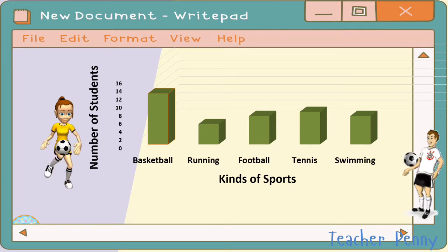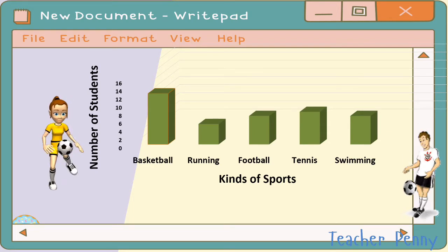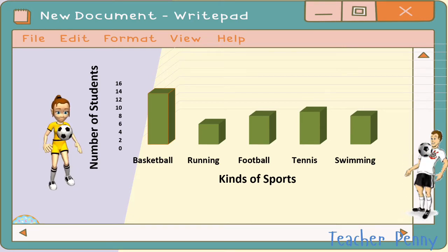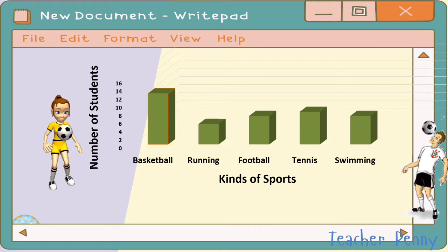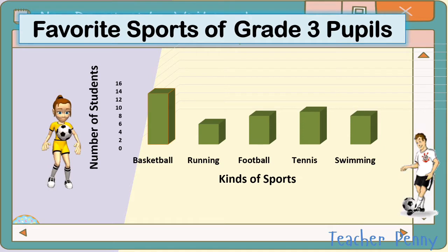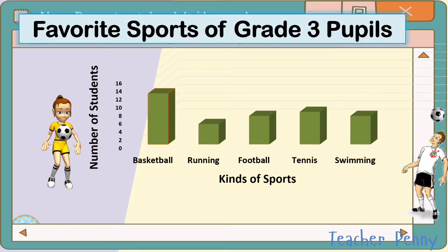Look at the picture. This is an example of a bar graph. At the side, we can see the number of students or number of pupils. Below, we have basketball, running, football, tennis, and swimming — these are the kinds of sports. Above is the title: Favorite Sports of Grade 3 Pupils.